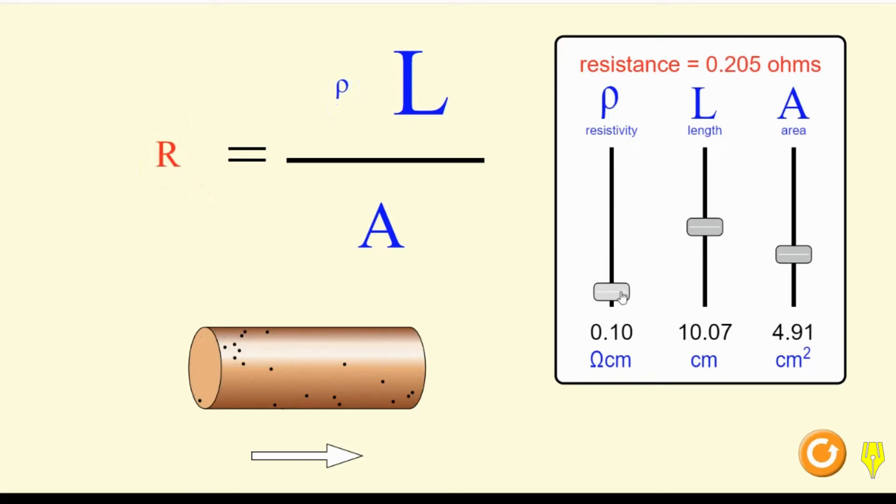As resistivity is reduced, the resistance of the material also reduces. Very low resistivity materials are conductors, while those with very high resistivity are insulators.